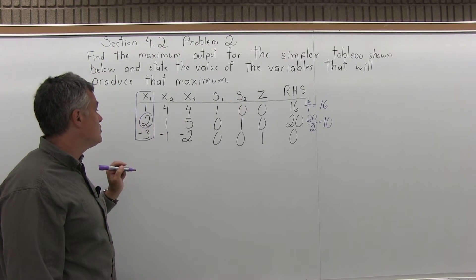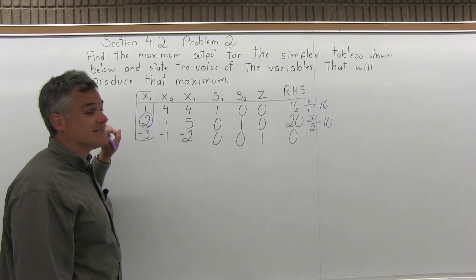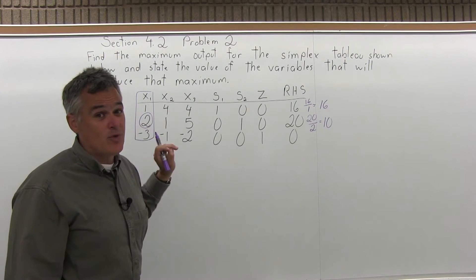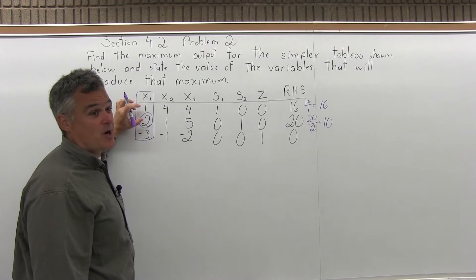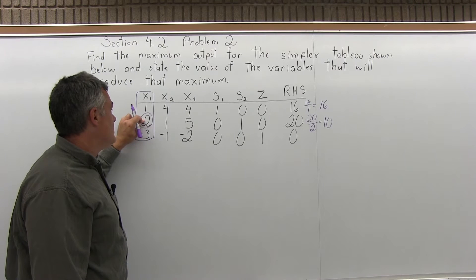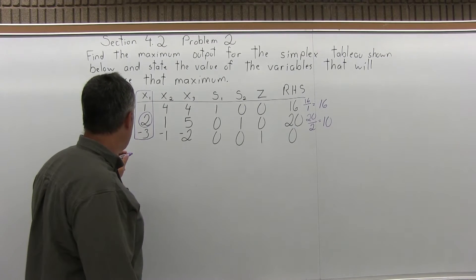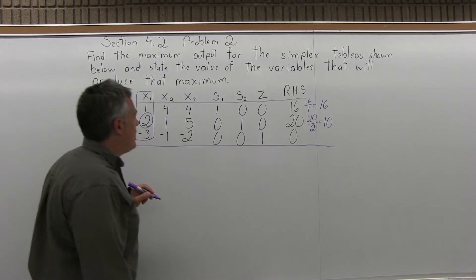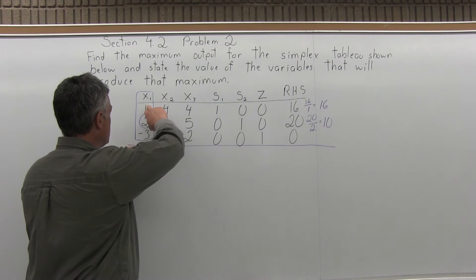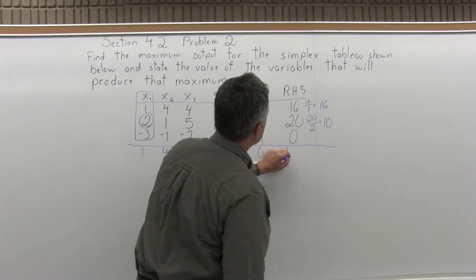I must pivot the 2 — turn that 2 into a 1 and turn the rest of the pivot column (the x1 column) into zeros. Unfortunately, I cannot just swap rows. When using the simplex method, I have to multiply through by 1 over 2 to turn the pivot 2 into a 1, which will create some fractions. Let's start our next tableau. The top row will not change, so I copy it as is: 1, 4, 4, 1, 0, 0, 16.